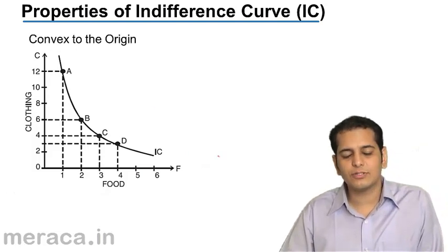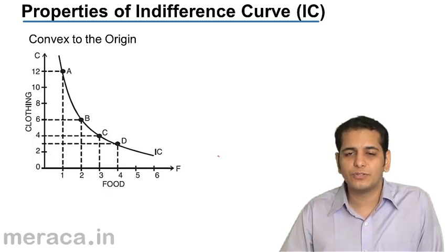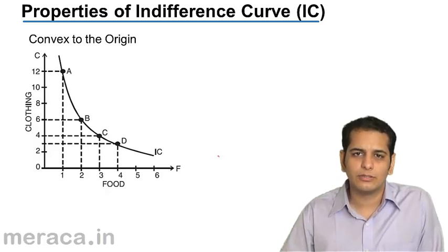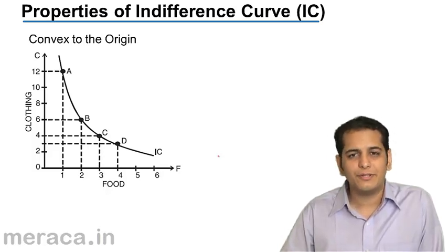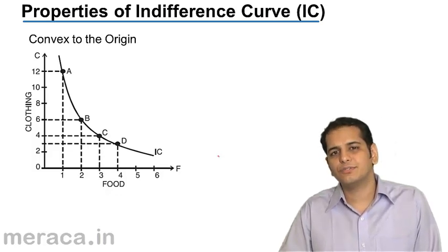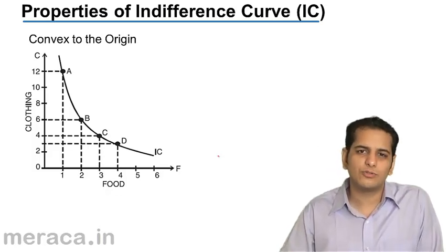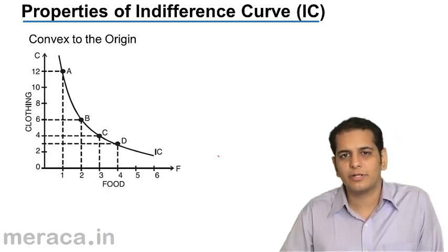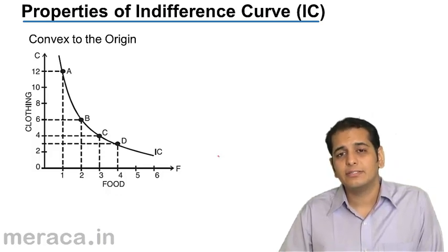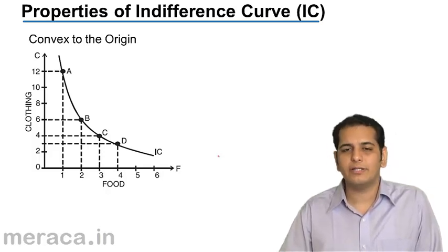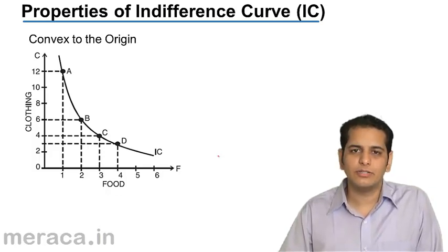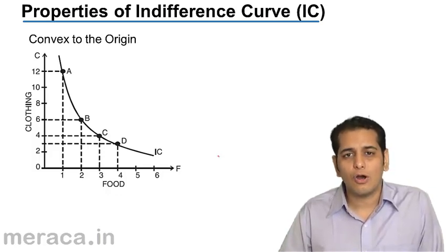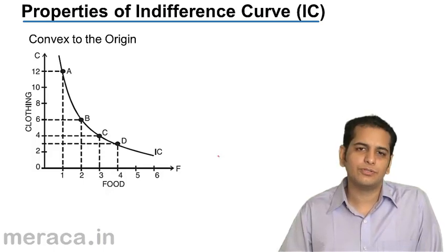The second property is the indifference curve is convex to the origin. The indifference curve is downward sloping from left to right, yet its shape is convex to the origin.